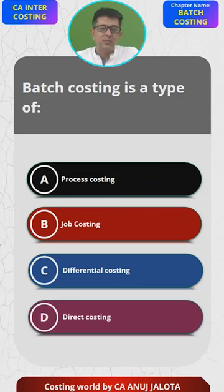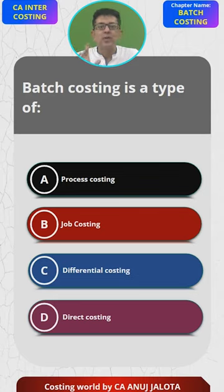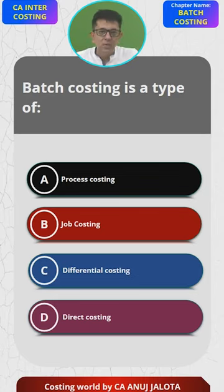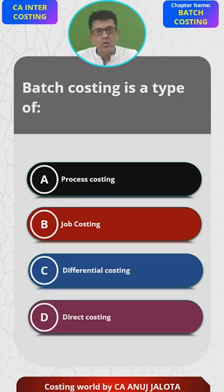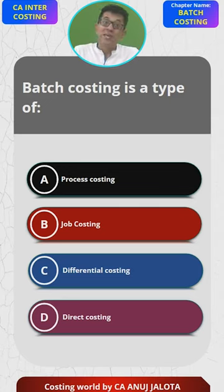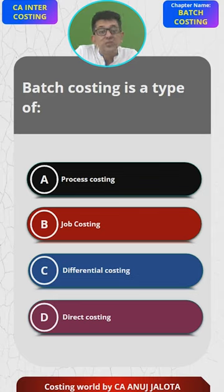Batch costing is similar to job costing except a customer comes and says 'I want 1000 similar shirts of this design.' These 1000 shirts will be called one batch. Once you find the cost of each batch, you divide by the number of units in that batch to find the cost per shirt. Every batch is different, although within each batch every unit is the same. In job costing you manufacture one unit; in batch costing you track units that are homogeneous.